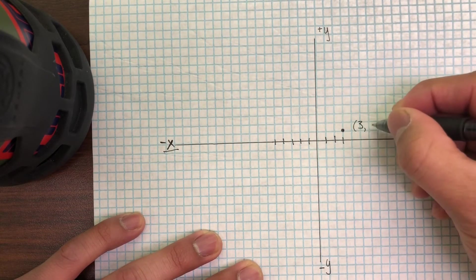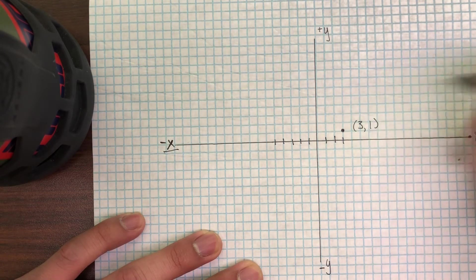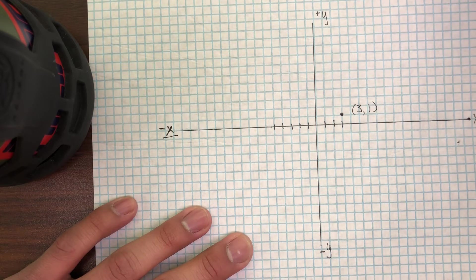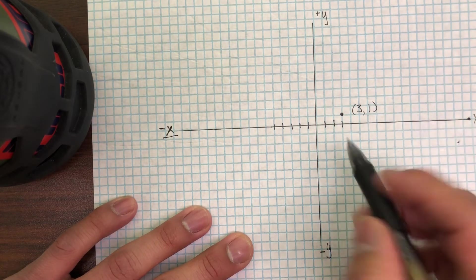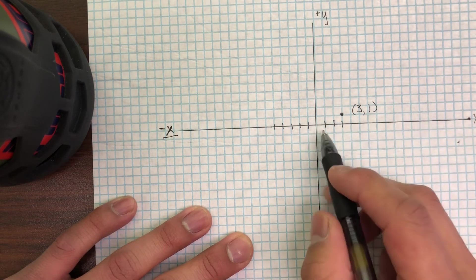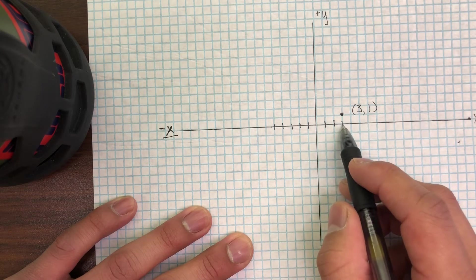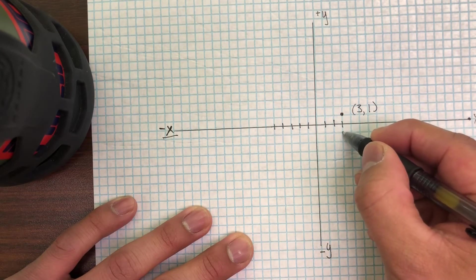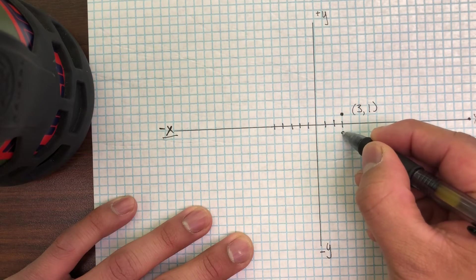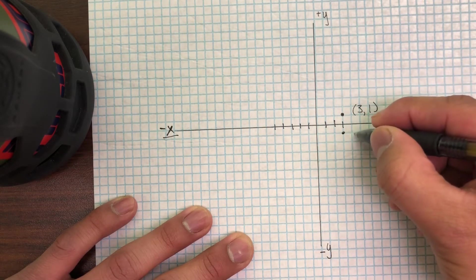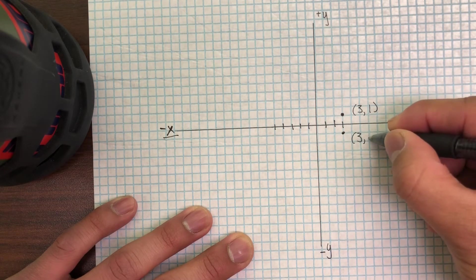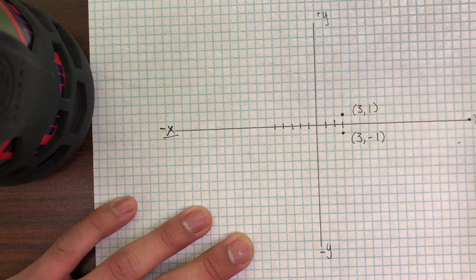And then we'll go to our next one. In the problem it's a positive 3, negative 1, so again we're gonna go to the right 1, 2, 3, but instead of going up we're gonna go down 1 because it's going negative. So I put my point here and then I label it 3, negative 1.